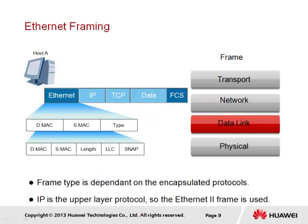Since the upper layer protocol is IP, the Ethernet2 frame type is applied as part of the Ethernet encapsulation process. The frame header consists of the source MAC address of host A and the destination MAC address of the next hop, which in this case is the MAC address of the gateway RTA. The type field will point to IP, and so will be populated with the hexadecimal value 0x0800. The frame header and trailer represent a total size of 18 bytes, giving a frame size of up to 1518 bytes at this point.